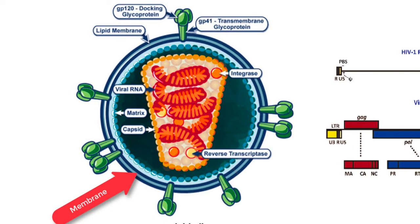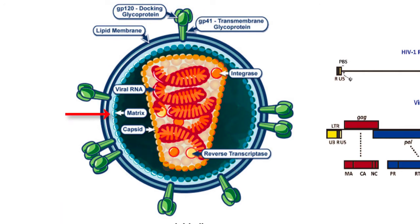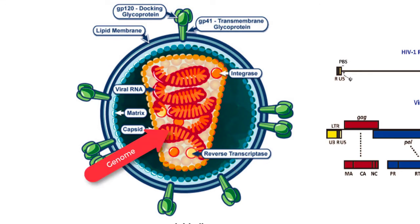HIV is an envelope virus with two lipid proteins forming the surface envelope protein that inserts into the membrane. Inside the membrane is a matrix protein that forms a shell. The nucleocapsid, which is inside the matrix, holds the genome, which consists of two identical copies of a positive single-stranded RNA. Attached to one end of the nucleic acid is an RNA polymerase, and an integrase is also present inside the nucleocapsid.